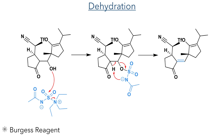To eliminate the hydroxyl group formed by the Utimoto coupling, the authors utilise the Burgess reagent to carry out a dehydration reaction. This reacts with the hydroxyl group and increases its ability to act as a leaving group. Intramolecular deprotonation of the alpha proton by the amide moiety eliminates the sulfate leaving group to stereoselectively produce the desired enone.